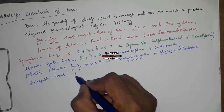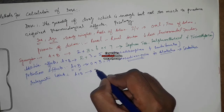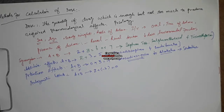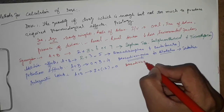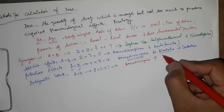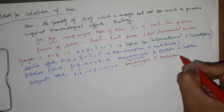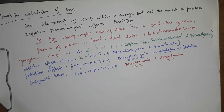Antagonistic effects occur when one drug opposes the effect of another. If the effect of drug A is 2 and drug B is minus 2, the resultant effect is 0. For example, if benzodiazepine (a sedative) and amphetamine (a stimulant) are given together, they reduce each other's effects, so to achieve the desired effect, the dose of one of them must be increased.